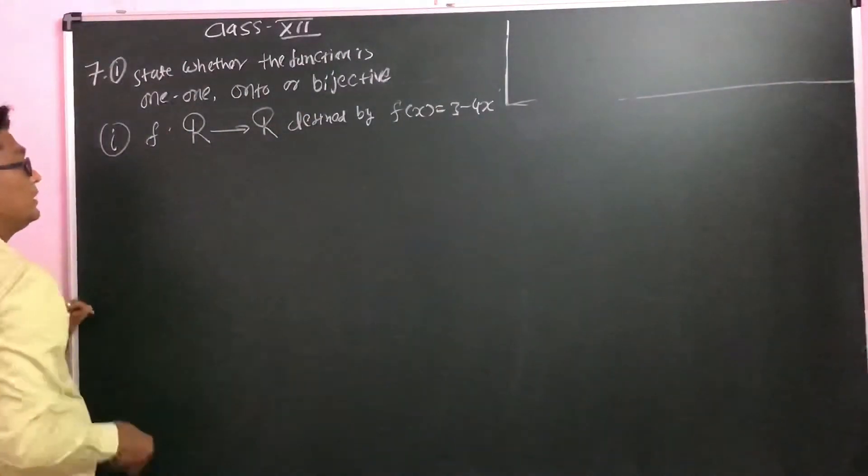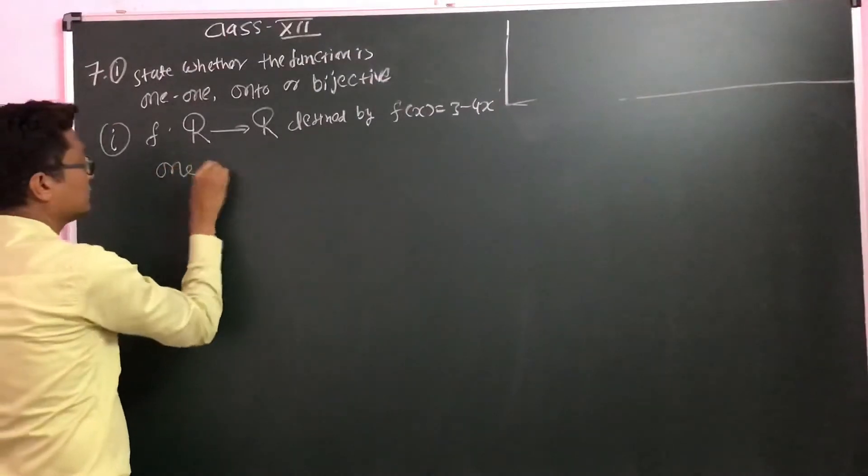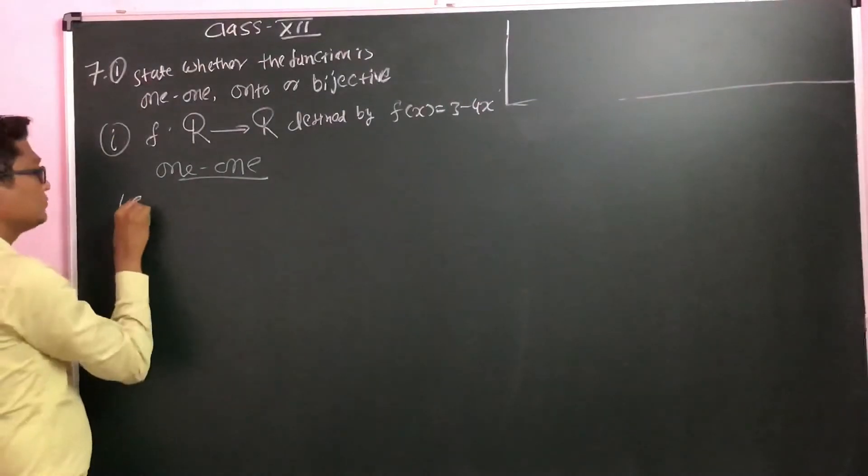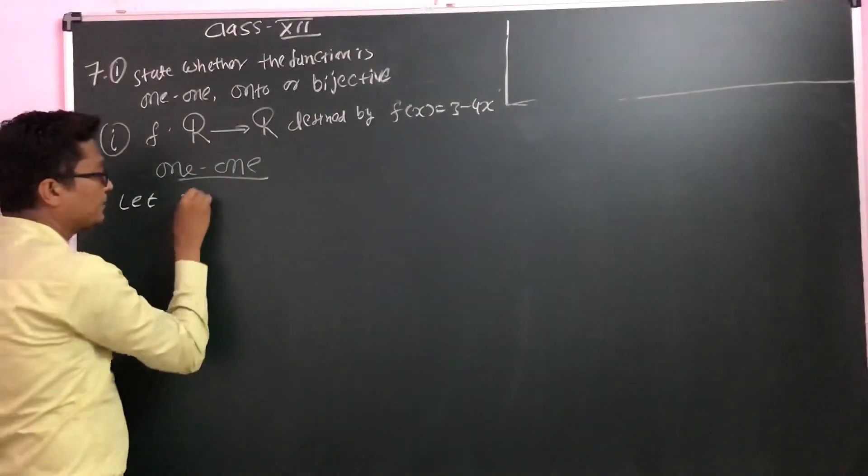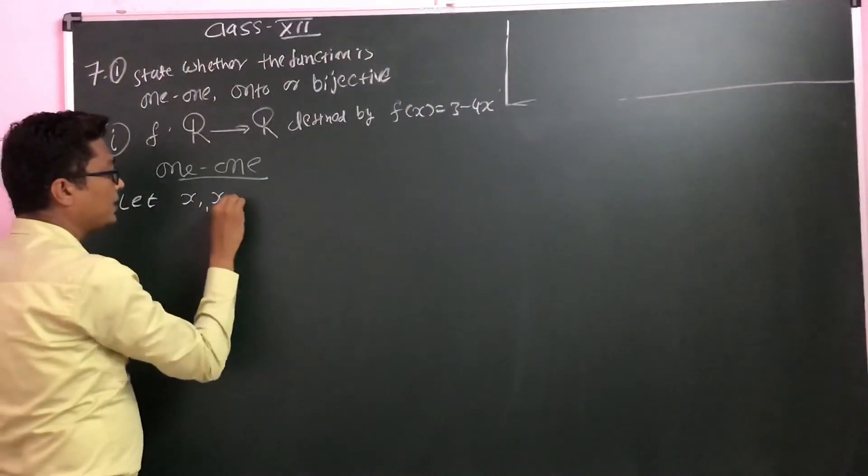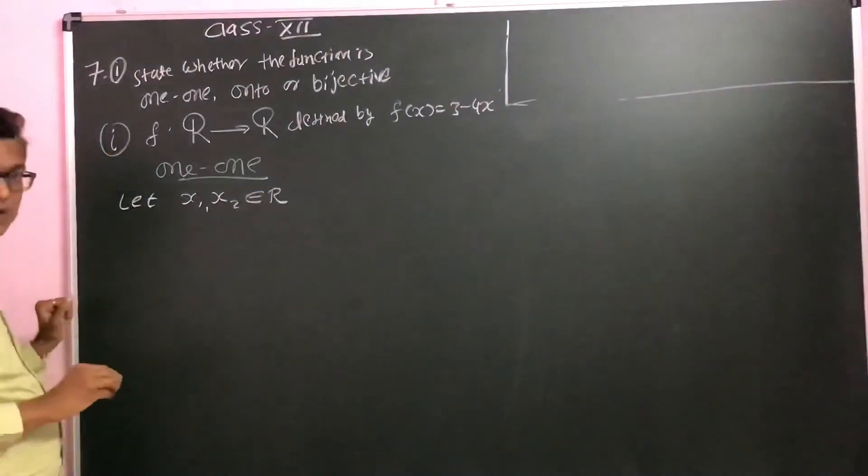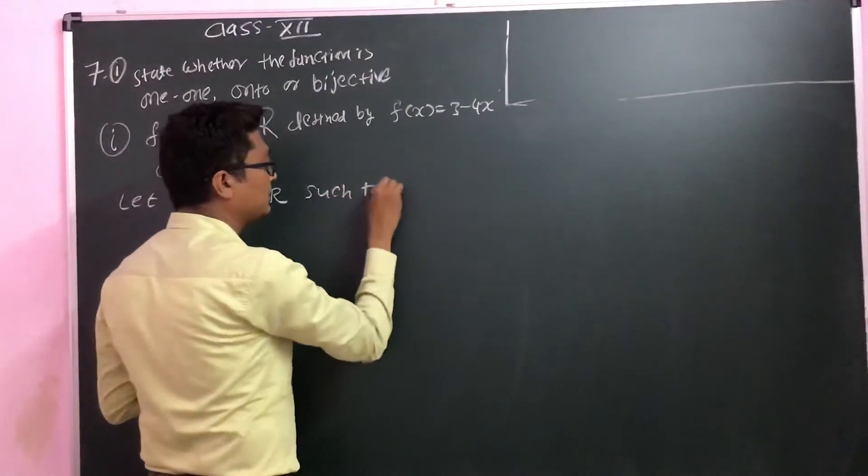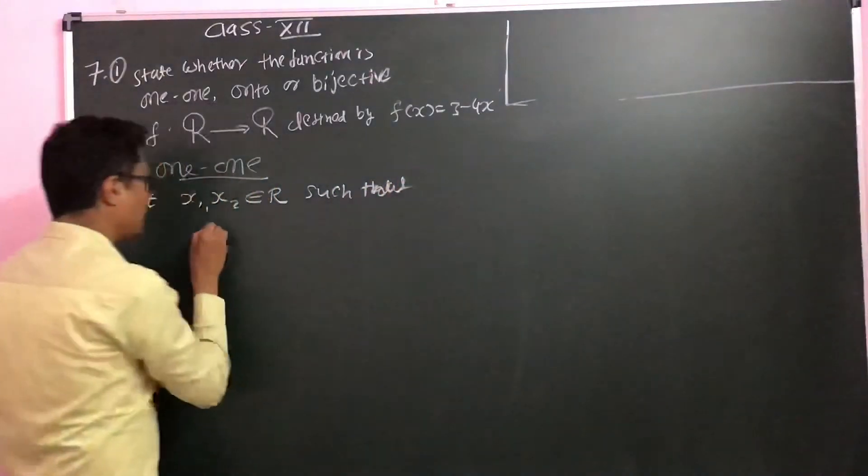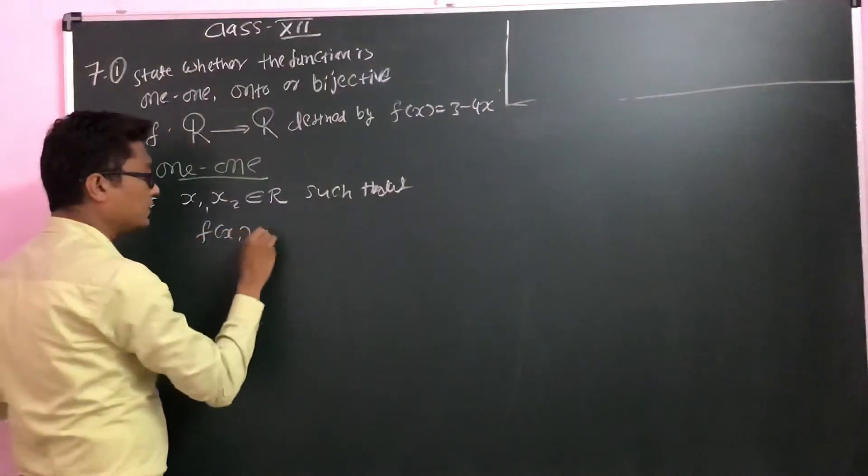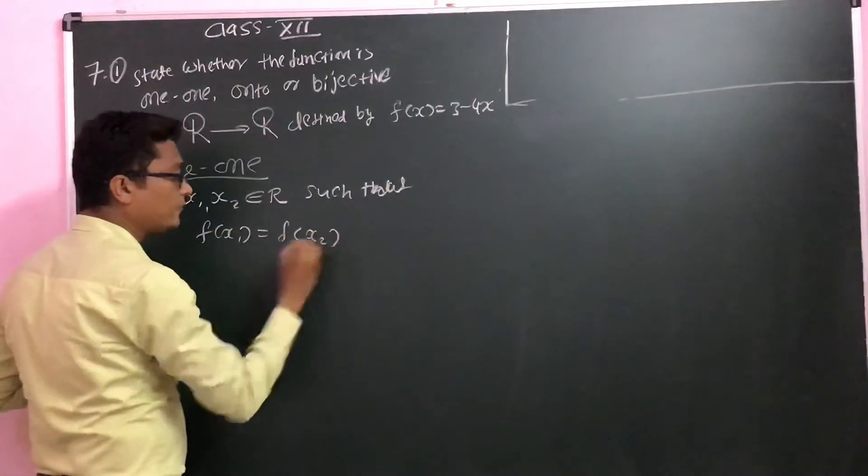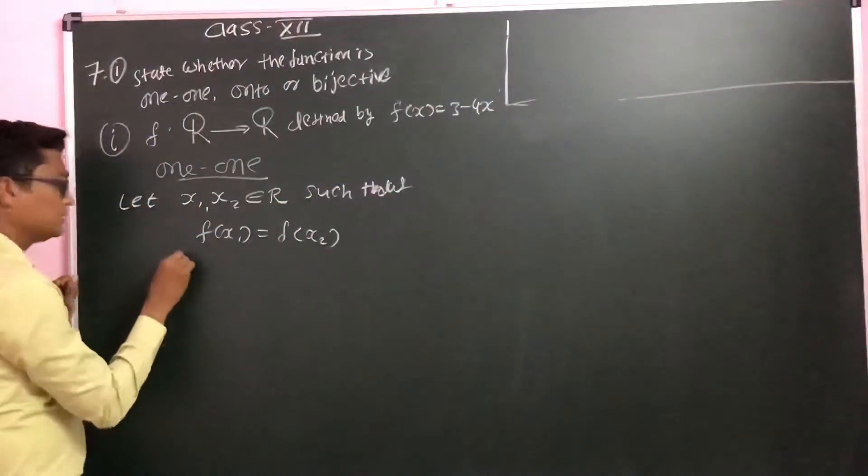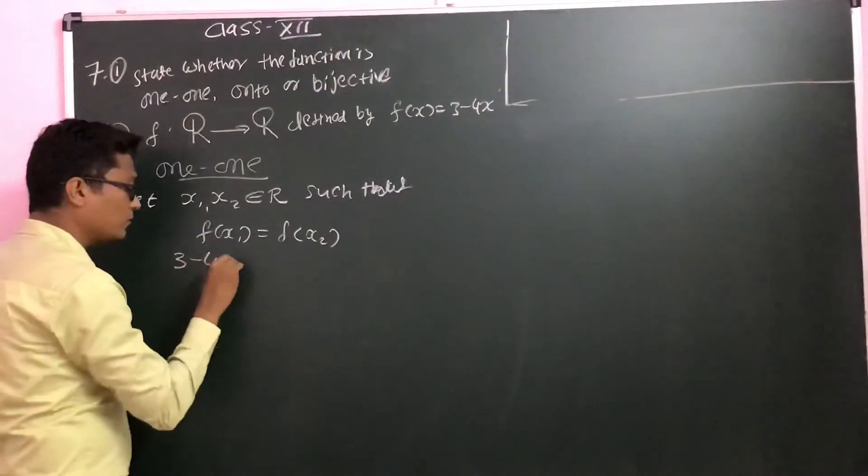So let us do it for one-one first. We will take x1 and x2. Let x1 and x2 belong to R such that f(x1) equals f(x2). Now we will prove the value, so here 3 minus 4x, so 3 minus 4x1.